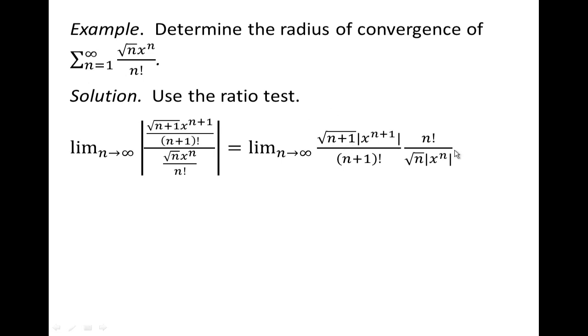And so we end up with this quantity. And now we simplify. The way we simplify is we gather things that are like. So for instance, we have the square root of n plus 1 and the square root of n. We'll gather those two together.